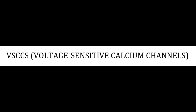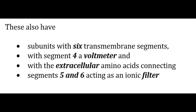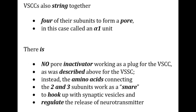Now let's discuss voltage sensitive calcium channels. These also have subunits with 6 transmembrane segments, with segment 4 acting as a voltmeter and with the extracellular amino acids connecting segments 5 and 6 acting as the ionic filter. Calcium channels also string together 4 of their subunits to form a pore, in this case called an alpha 1 unit.